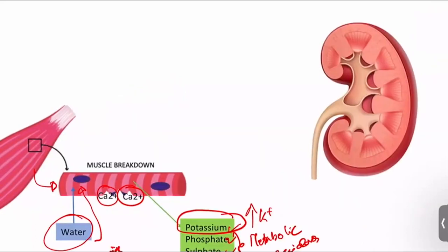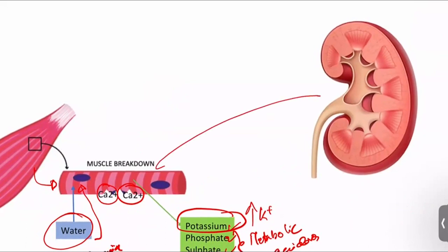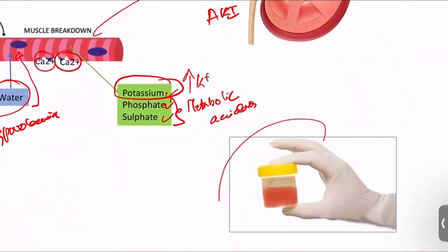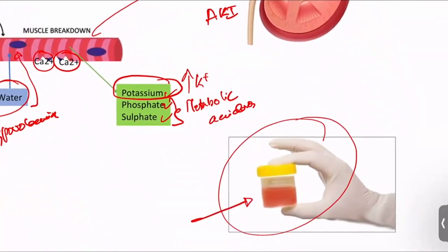This broken down muscle should be excreted through the kidney. Getting stuck in the kidney will result in acute kidney injury. Some muscle fibers get excreted in the urine, so urine appears dark in color.